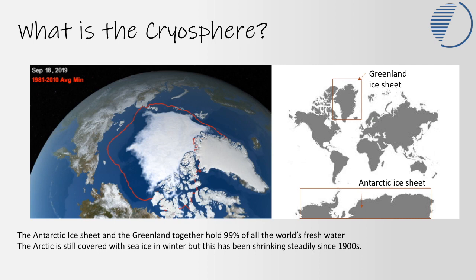At high latitudes — the North Pole and the South Pole — we find areas of sea ice. At the North Pole, we also find areas of permafrost and the Greenland ice sheet, all in the Northern Hemisphere. In the Southern Hemisphere, we have a very large ice sheet covering Antarctica.